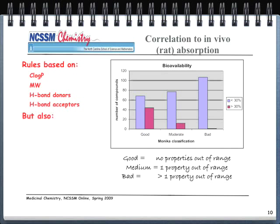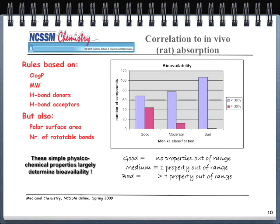Additional factors include polar surface area and the number of rotatable bonds, which you encountered in the first lab. These are all called physico-chemical or physiological chemical properties, and they largely determine bioavailability. You can calculate or estimate these numbers, and based on those predictions, you can have a good idea of what the bioavailability might be. Bioavailability means the drug is available for therapeutic use.